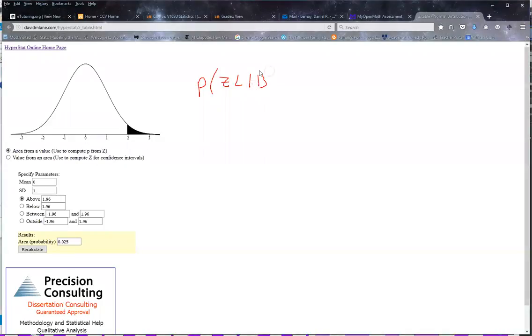Let me write this down: 1.13, and then I'll write down the rest of them too. Suppose I want to find the probability of getting a z-score that's greater than 1.13.